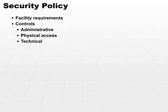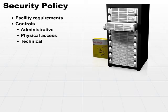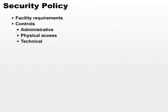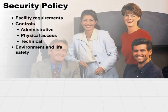Then we have technical controls. Technical controls are pieces of software or hardware that help us to secure our assets. So we'll look at each one of those controls in their own little sections. And lastly, we need to be concerned with environment and life safety issues. If your physical security plan and policies do not cover keeping a pleasant and safe environment that supports life safely, then you're not going to have a complete policy. So we'll look at each one of these individually.